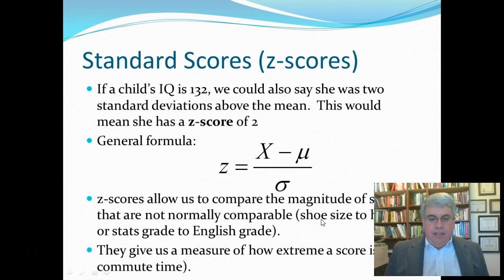So, the Z-scores essentially give us a measure of how extreme a score is. For example, commute time. If we had a bunch of commute times for students, and how long it takes to get there, we could convert them to Z-scores and see how extreme different people's scores are.